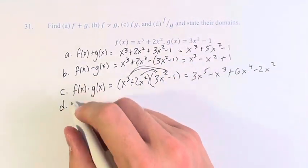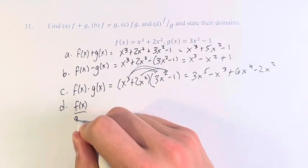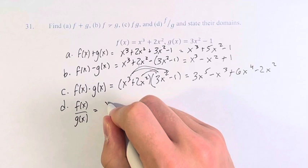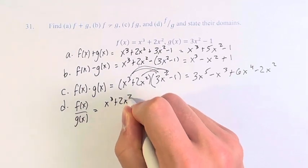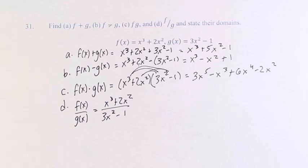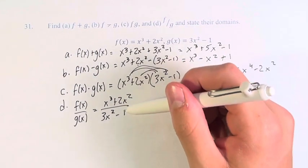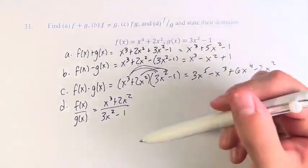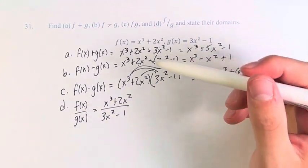And d, f divided by g equals x cubed plus 2x squared over 3x squared minus 1. And there doesn't seem to be an easy way to simplify this, right? There's nothing to divide out, so we're just going to leave it like this.